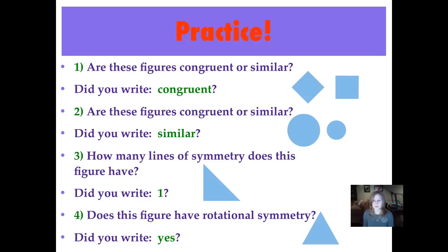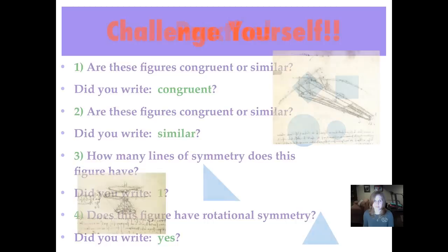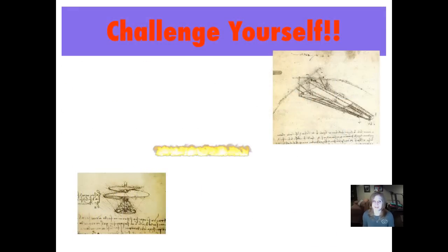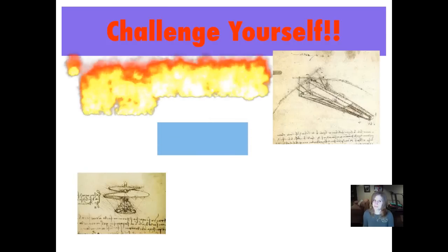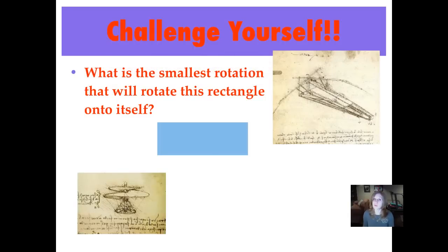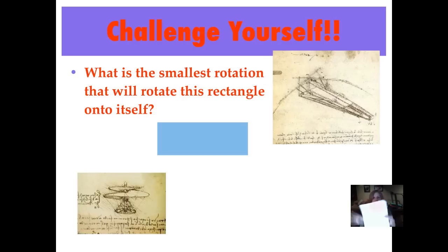Did you write yes? It actually looks the same several times before you've rotated it 360 degrees, so it does have rotational symmetry. Now it's time to challenge yourself. Here's a rectangle — what is the smallest degree of rotation that will rotate this rectangle onto itself? We generally talk in terms of 90-degree, 180-degree, 270-degree, and 360-degree rotations. Bring your answer back tomorrow and we'll go over it in class.